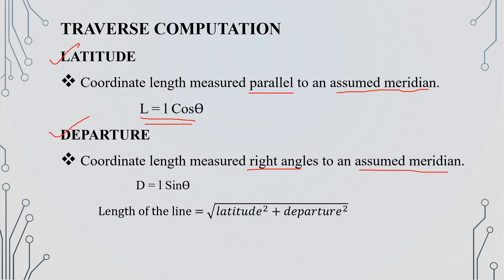In traverse computation: Departure d = l × sin θ. The length of the line = √(latitude² + departure²). The sign convention: latitude is positive and departure is positive. The rest of the topics will be covered in the next class. Please like, share, and subscribe. Thank you for watching.